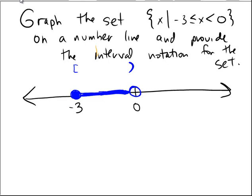The interval notation for this interval: we look at the number line and see where we start shading. Starting from the far left at negative infinity, I'm not shading — and then all of a sudden I start shading at the number negative 3. I keep shading, and then I stop shading at the number 0.